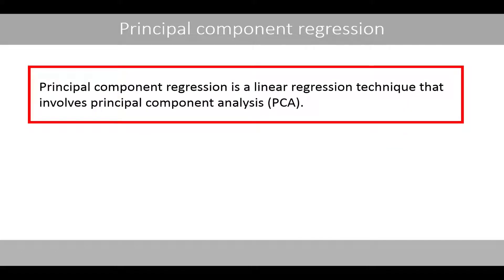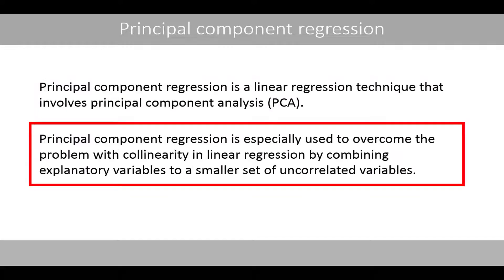Principal component regression is a linear regression technique that involves principal component analysis. It is especially used to overcome the problem of collinearity in linear regression by combining explanatory variables into a smaller set of uncorrelated variables.